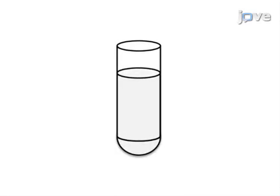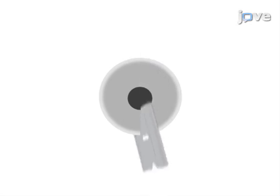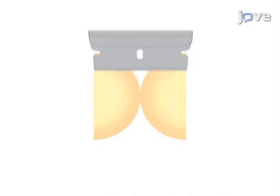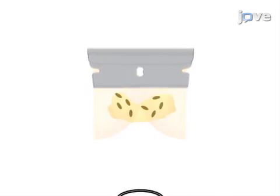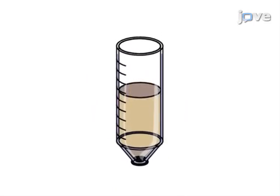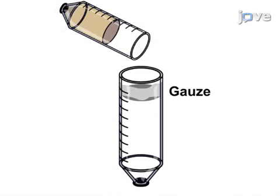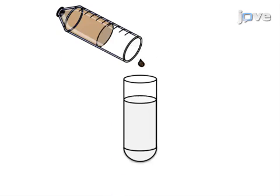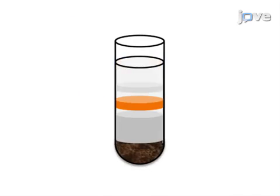This is accomplished by first casting 25 to 60 percent sucrose gradients in ultracentrifuge tubes. Next, porcine or bovine eyes are dissected and the retinae are collected and homogenized. The retinae are then filtered and loaded onto the sucrose gradient and centrifuged to separate the photoreceptor outer segments.